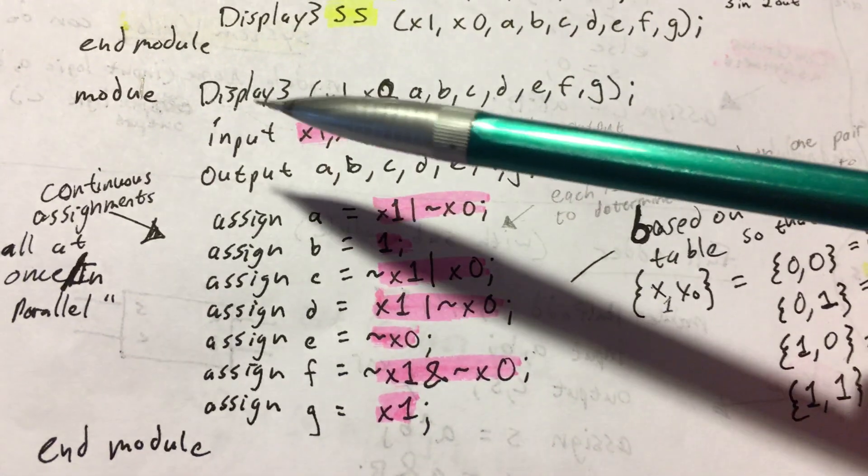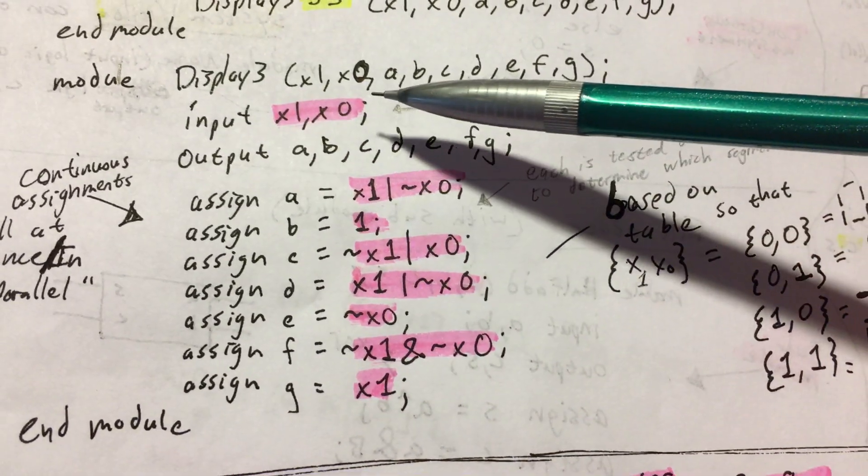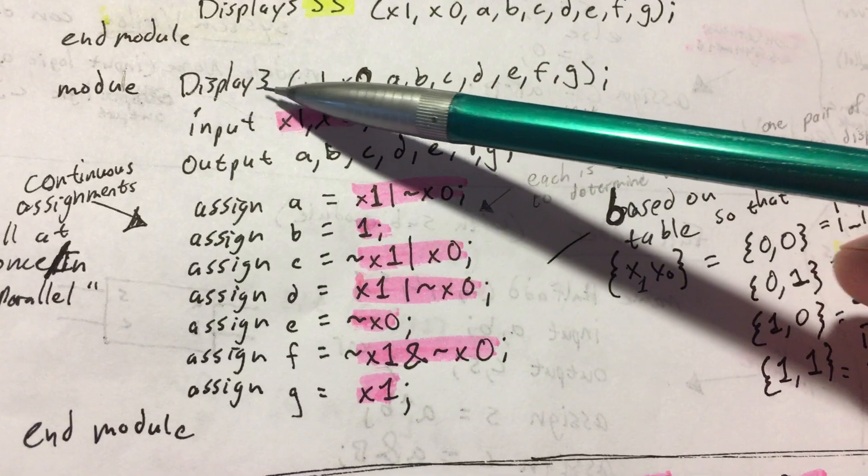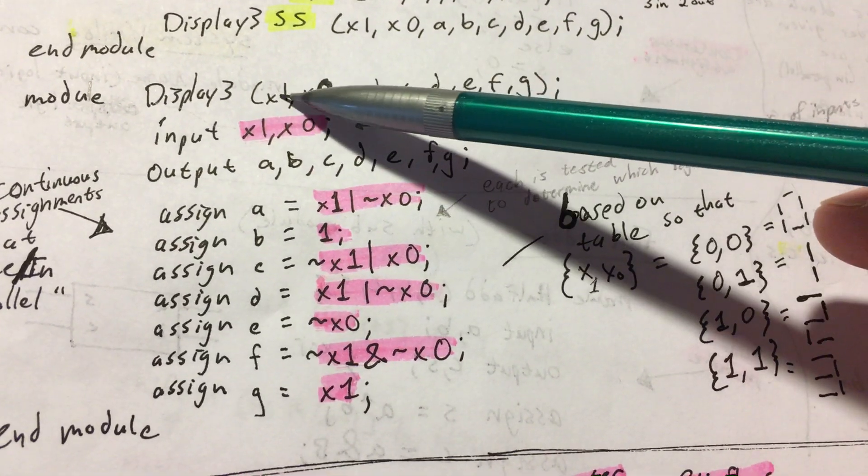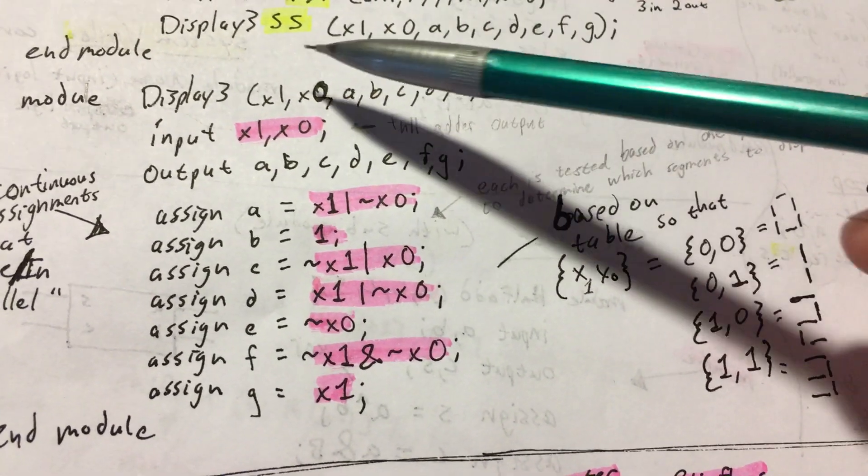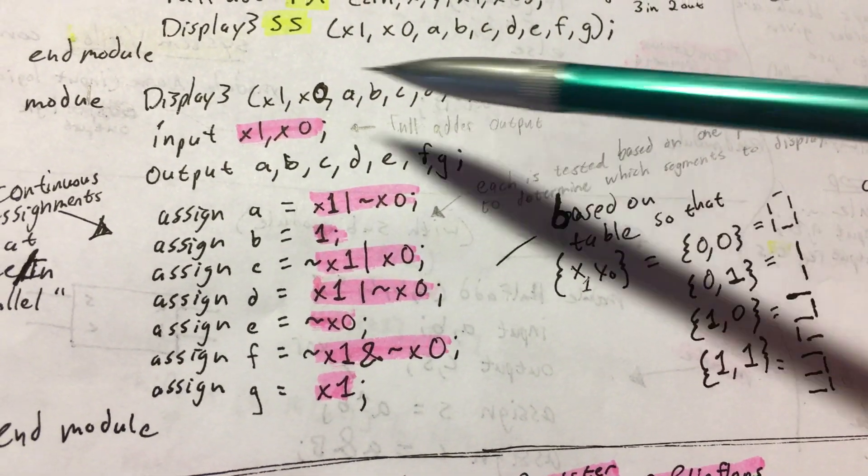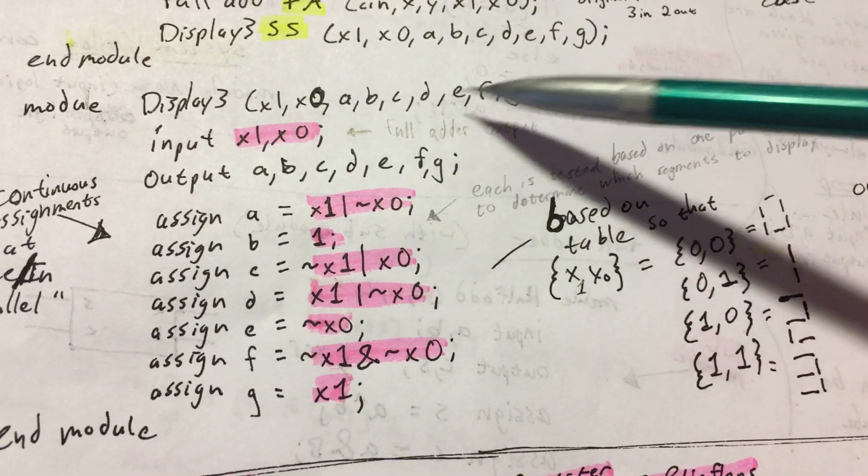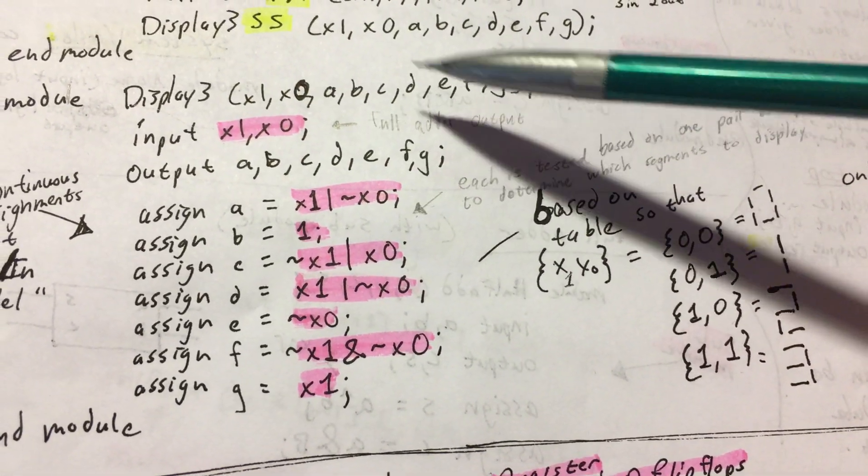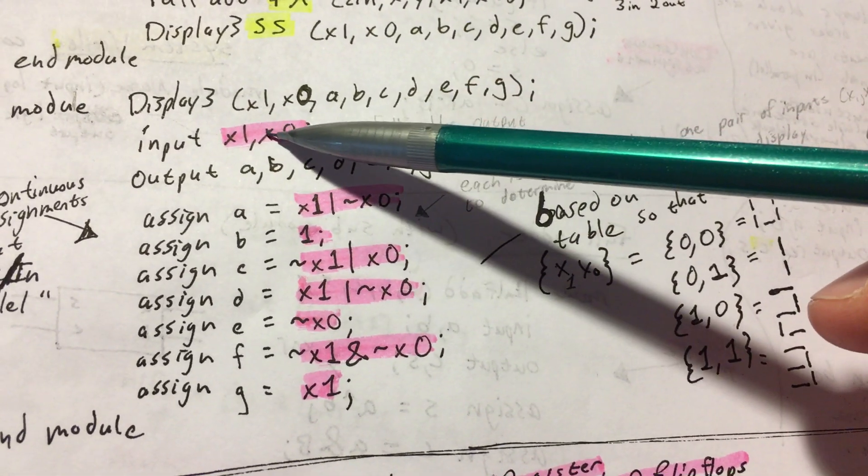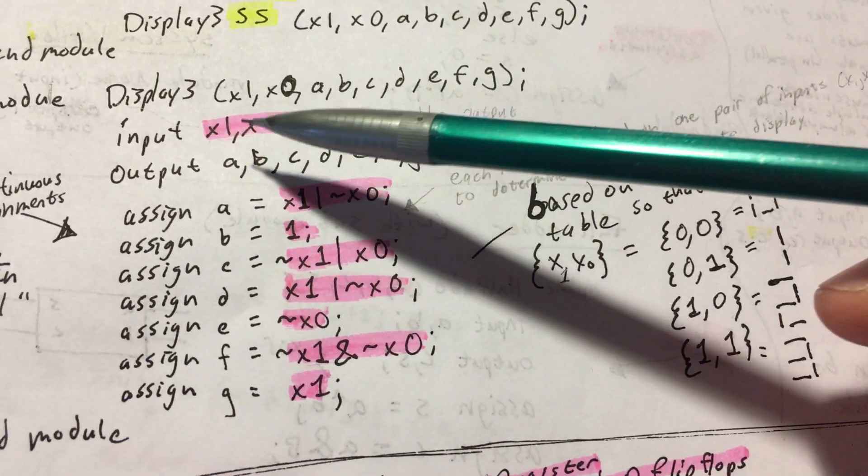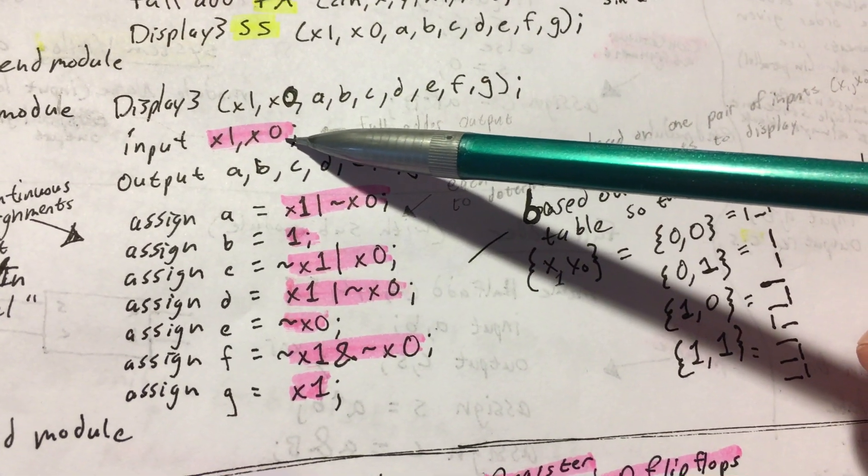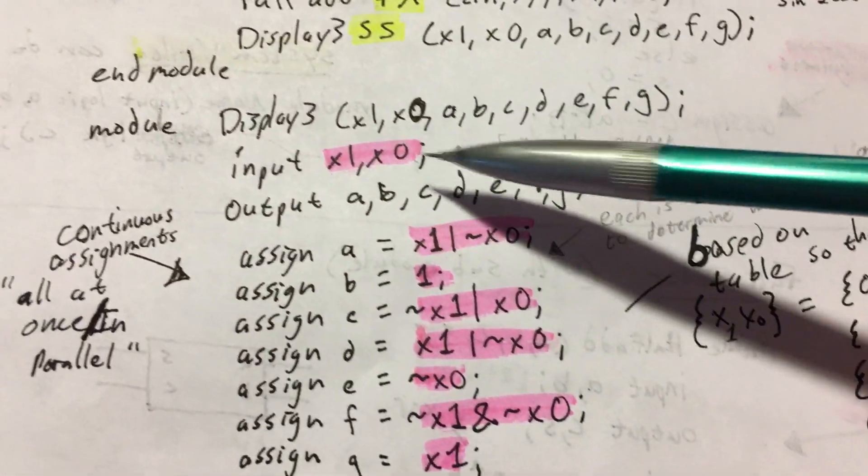So here's that code, the module. It's called Display 3. This is the sensitivity list. And you just write all the inputs and outputs that you want it to be looking out for. Anytime one of those changes, it's going to recalculate. Down here, you're going to declare which are inputs and which are outputs. X1 and X0, in this case, indicate our buttons.